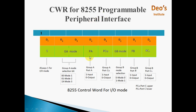The Programmable Peripheral Interface contains 3 ports: Port A, Port B, and Port C. Port C is divided into Port C upper and Port C lower. Group A mode selection bits are represented by D6 and D5. Here we are using mode 0 — simple input/output mode — so these two bits will be 0-0. The next bit is D4, which is for Port A. We are using Port A for output, sending digital numbers to the DAC, so this bit will be 0.